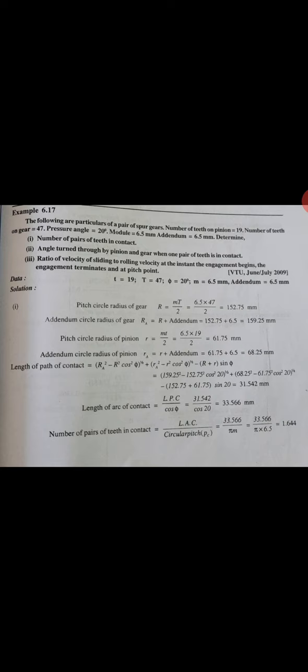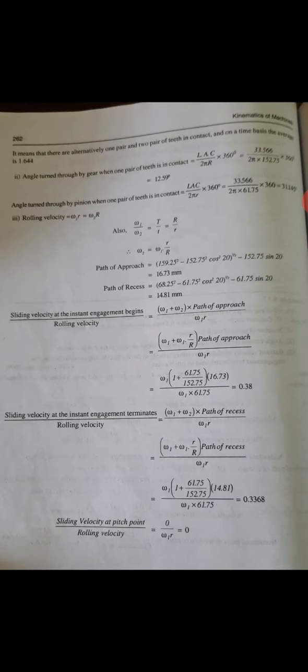Now angle turned by the gear is L_s upon 2π*R into 360. Substituting values we have 12.59 degrees. Angle turned by pinion: L_s upon 2π*r into 360, that is 31.145 degrees.